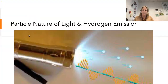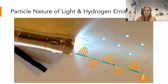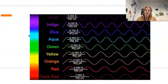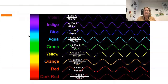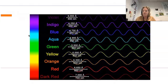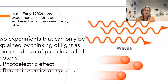This video introduces the particle nature of light and the hydrogen emission spectrum. We learned in a previous lesson that light is part of the electromagnetic spectrum and is a wave. We know the differences between the waves — the colors of the rainbow — with red being the largest wavelength and smallest frequency, and violet being the smallest wavelength and largest frequency.